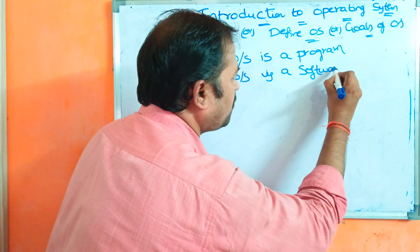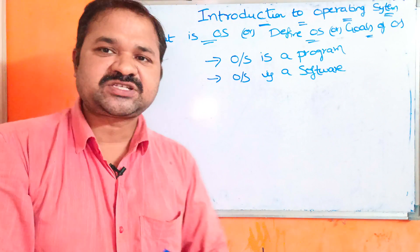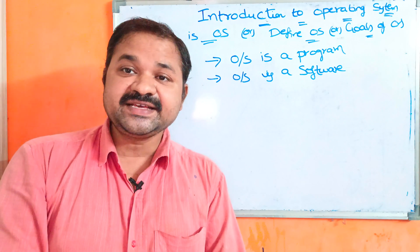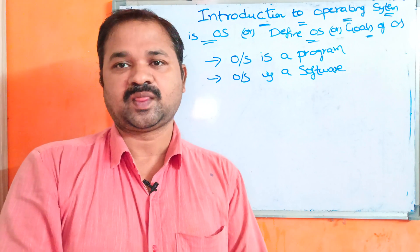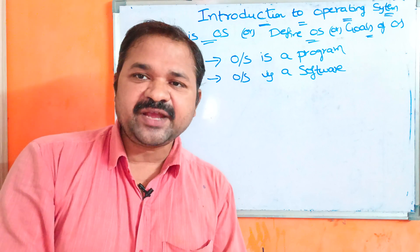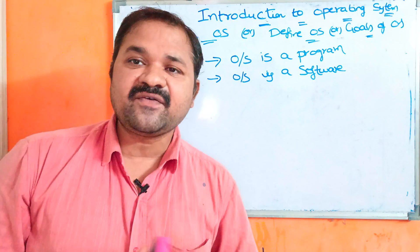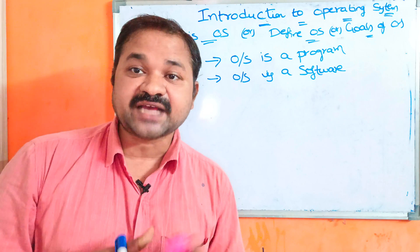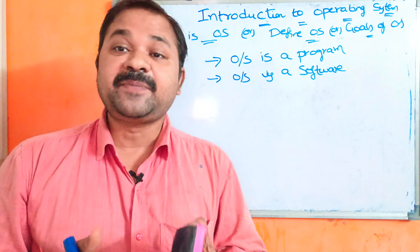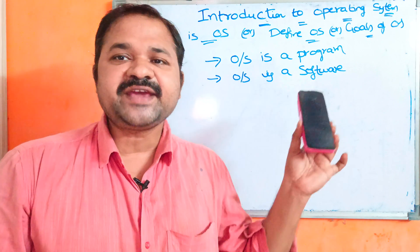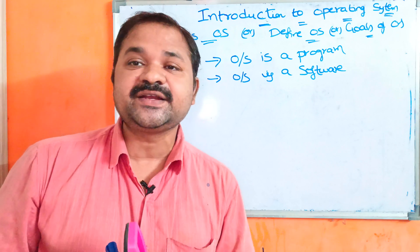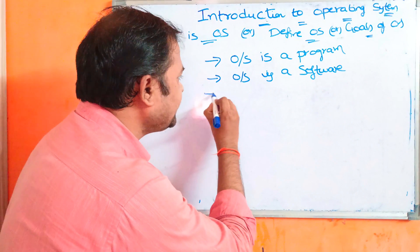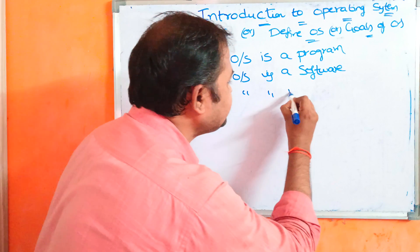We have two types of software. The first one is system software and the second one is application software. Application software means if a user develops an application, then it is called application software or an application program. Whereas the operating system comes under system software.